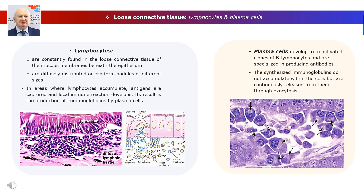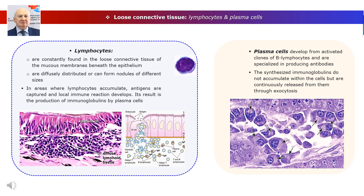In the loose connective tissue of mucous and serous membranes, in addition to fibroblasts and macrophages, lymphocytes and plasma cells are constantly encountered. Their presence reflects the development of immune reactions in these areas, providing protection against foreign proteins or antigens. Lymphocytes, the principal cells of the immune system, are constantly found in the loose connective tissue beneath the epithelium, forming the first line of defense against antigens entering through epithelial barriers. They are diffusely distributed or can form nodules; in areas where lymphocytes accumulate, foreign proteins are captured and local immune reactions develop.